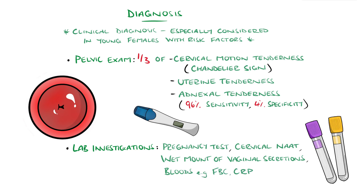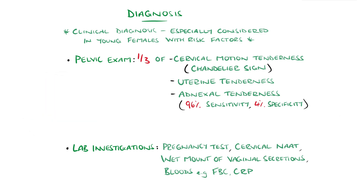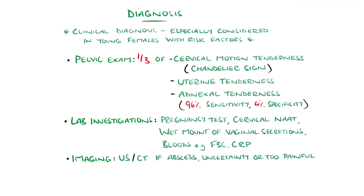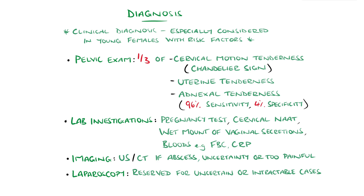Bloods including full blood count, ESR, or CRP may also be done. Imaging studies such as transvaginal ultrasound or CT are indicated when an abscess or alternative pathology is suspected, or if the pelvic exam is limited by pain. Laparoscopy remains the gold standard and can visualise pelvic structures directly, but is mostly reserved for uncertain cases or lack of response to treatment.